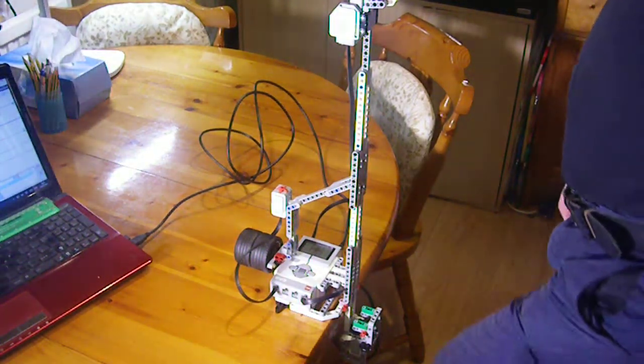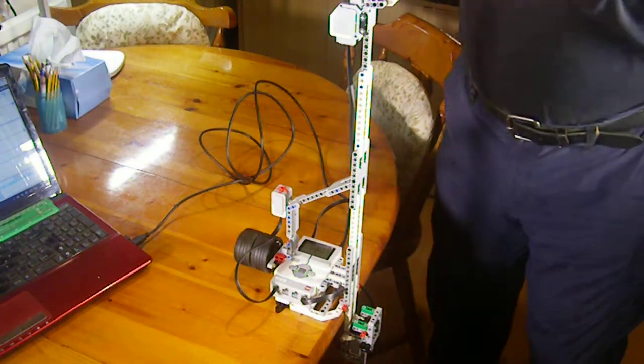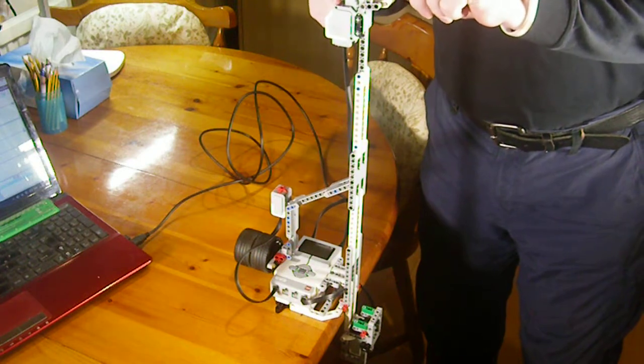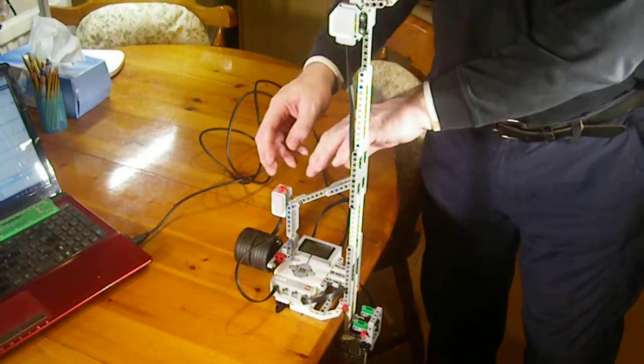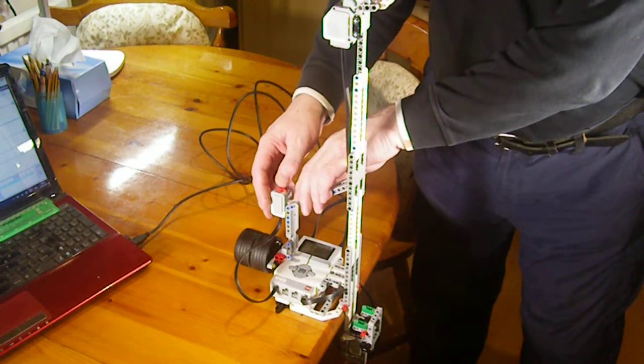Now we're working out acceleration due to gravity. We know the distance on this device. I'm going to load in a ball bearing, and the ball bearing will fall from the top to a sensor at the bottom.